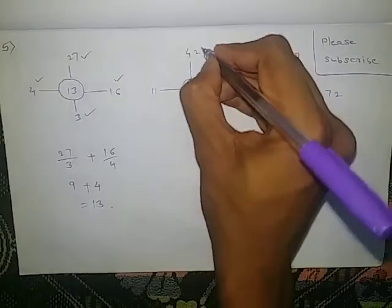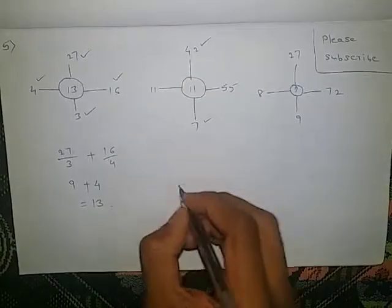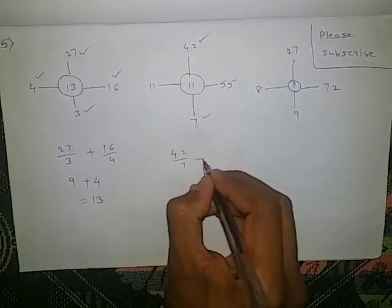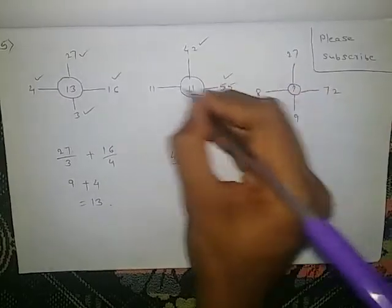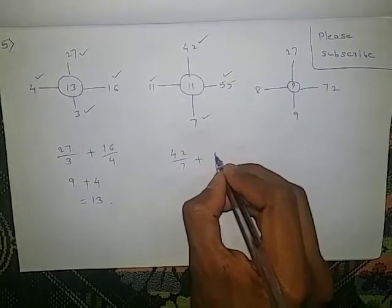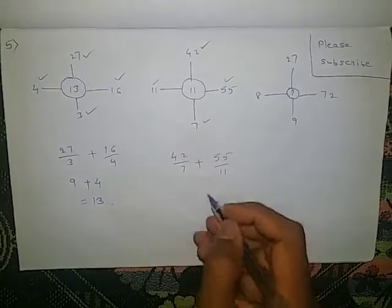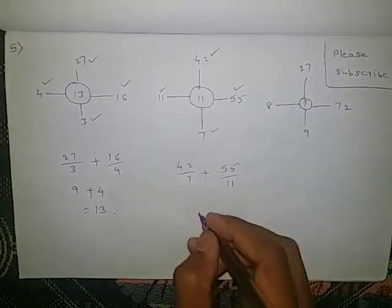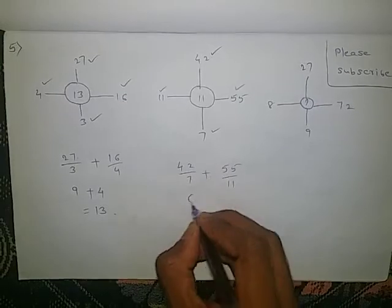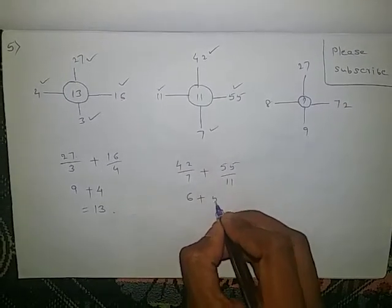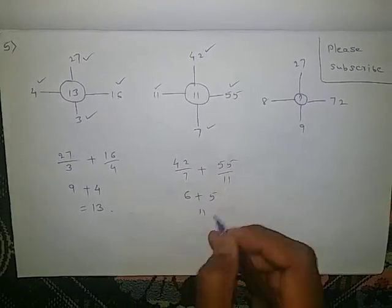Here also same: 42 by 7 plus 55 by 11. 42 by 7 is 6, plus 55 by 11 is 5. 6 plus 5 is 11. That is the middle number.